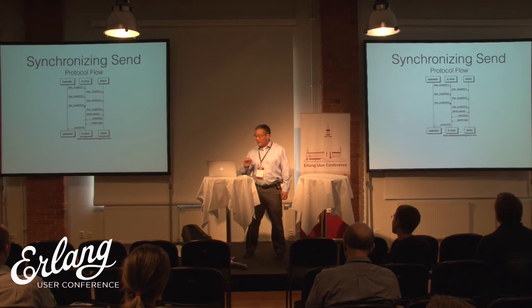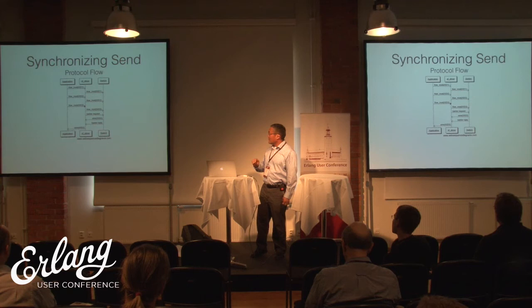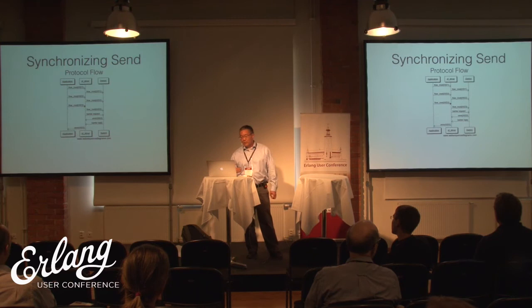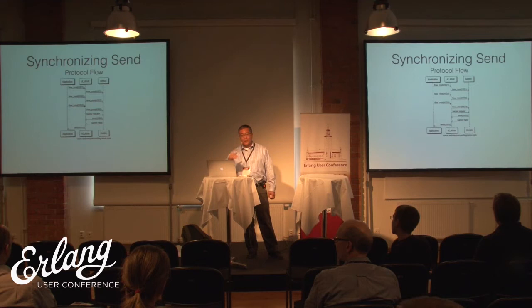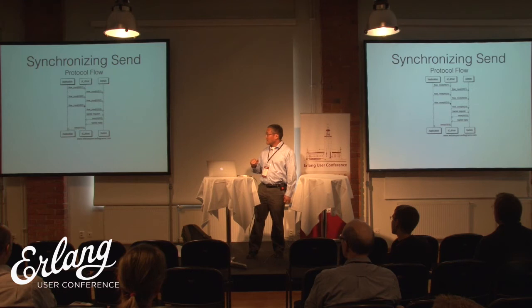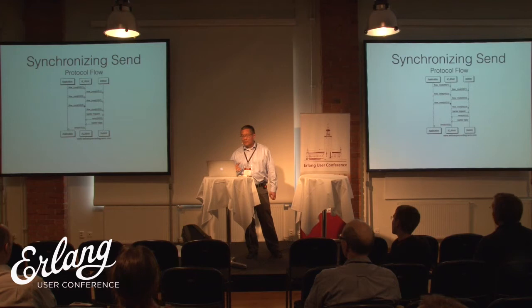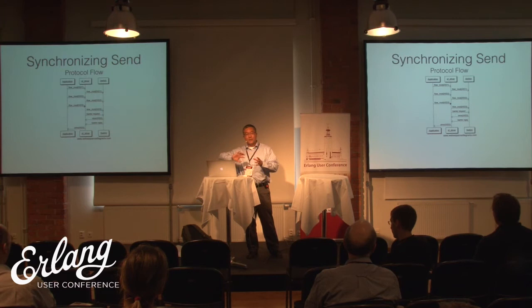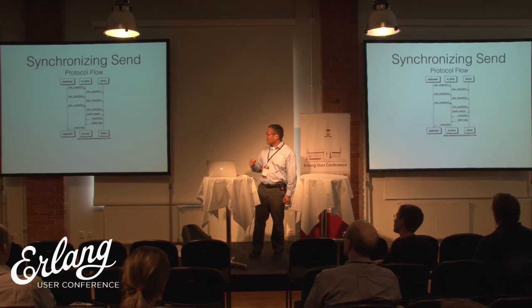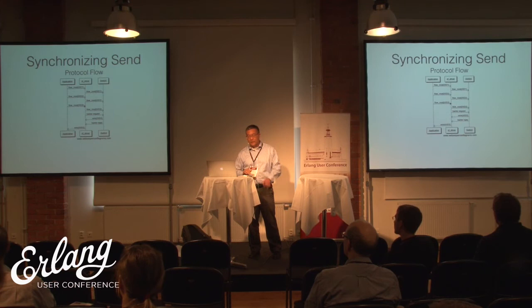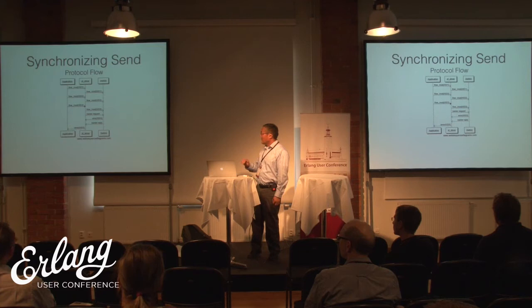They did think about this, and what the OpenFlow protocol provides is something called a barrier request. When you send a barrier request to the switch, the switch will respond with any messages that are pending until it gets to the barrier, then send a barrier response. In this way you can provide some sort of synchronous interface. In our libraries, we provide a synchronous send where we implicitly add the barrier, so we fix this impedance mismatch. The downside is you probably don't want to do this with every request because that'll be slower than sending a whole bunch of flows and then sending one barrier at the end. The barrier provides a way of guaranteeing that you've seen all the previous errors.